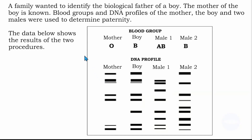The question goes like: a family wanted to identify the biological father of a boy. The mother of the boy is known. Blood groups and DNA profiles of the mother, the boy, and two males were used to determine paternity. The data below shows the result of the two procedures — comparing blood groups and comparing DNA profiles.